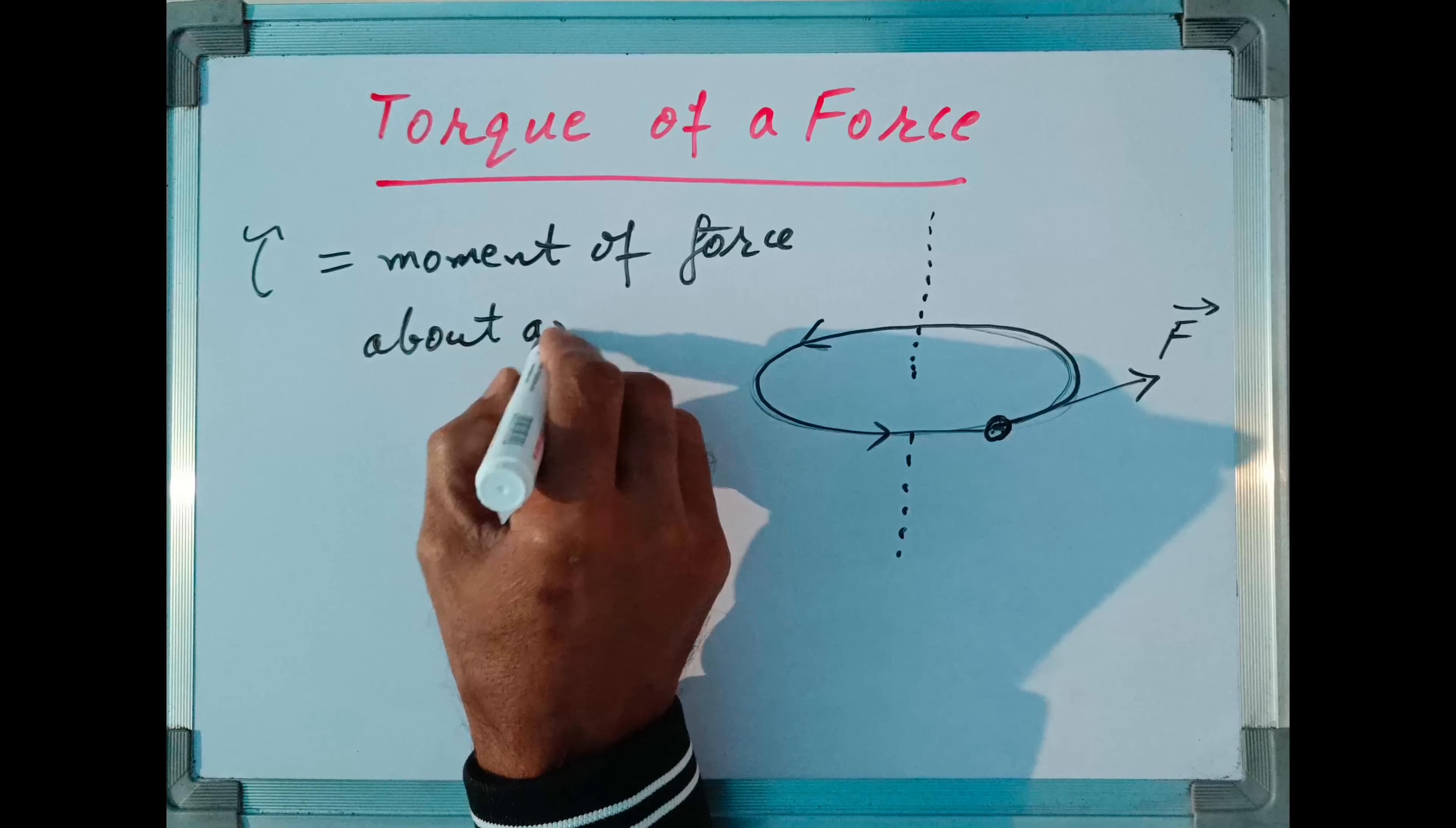This is the qualitative definition. How to calculate torque of a force quantitatively? Torque of a force is denoted by the letter tau, and it is defined as moment of force about axis of rotation. This is the quantitative definition of torque due to a force. Now how to find moment?